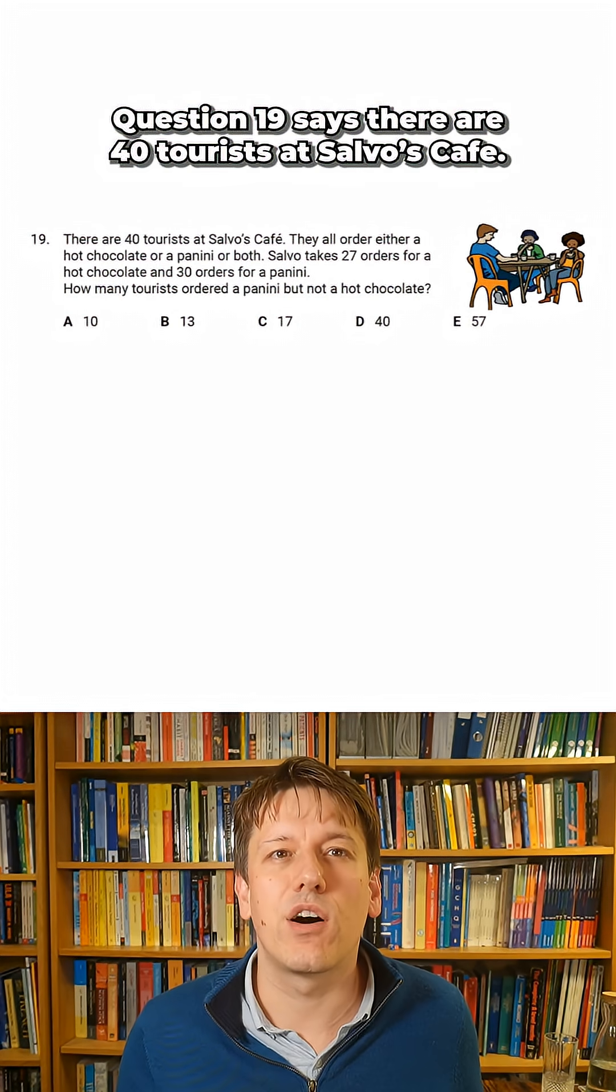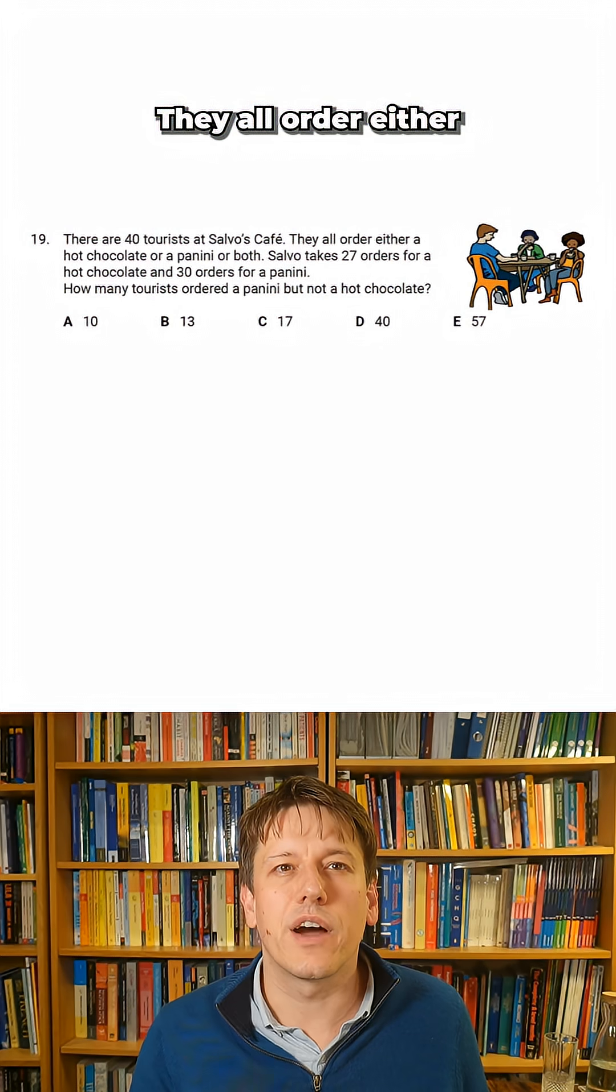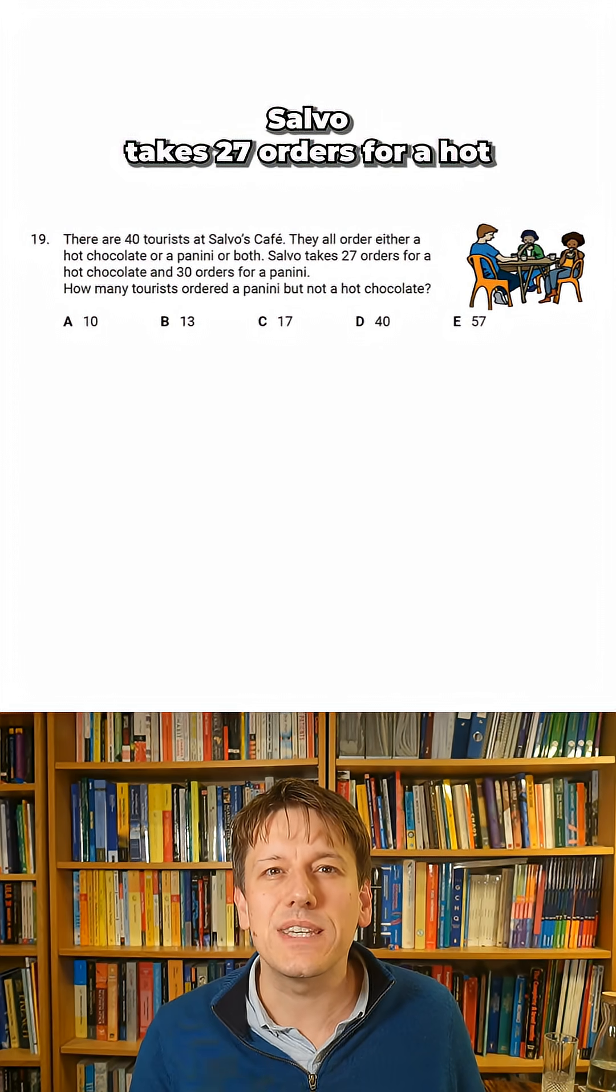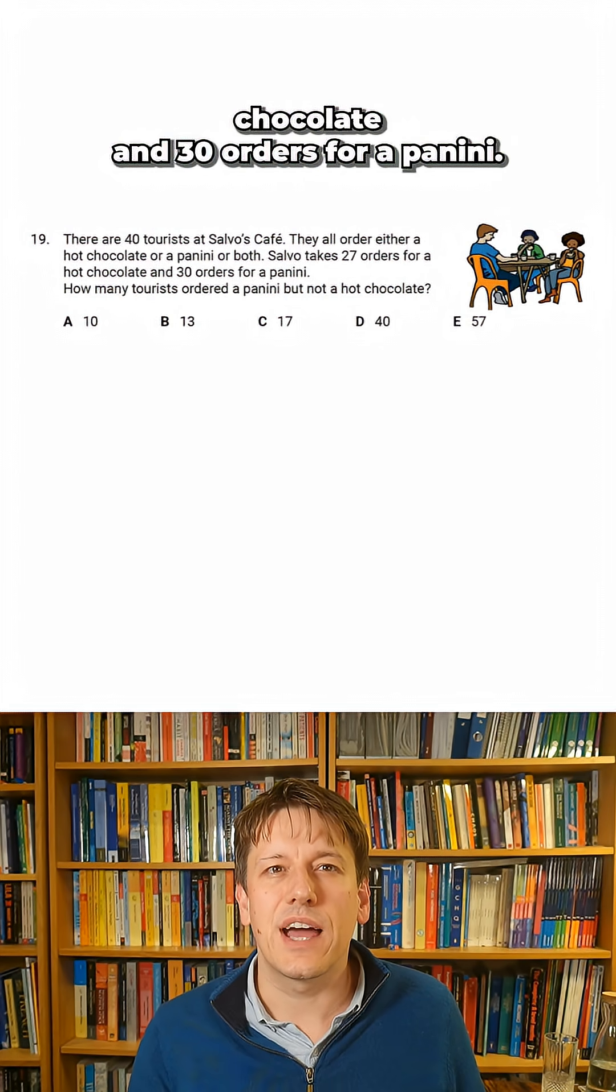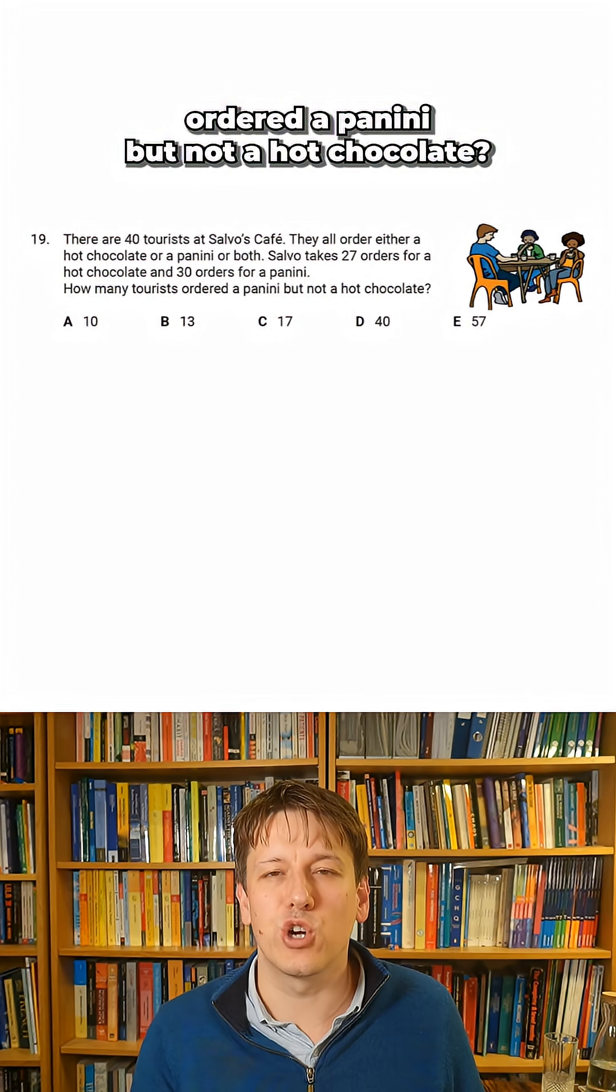Question 19 says there are 40 tourists at Salvo's cafe. They all order either a hot chocolate or a panini or both. Salvo takes 27 orders for a hot chocolate and 30 orders for a panini. How many tourists ordered a panini but not a hot chocolate?